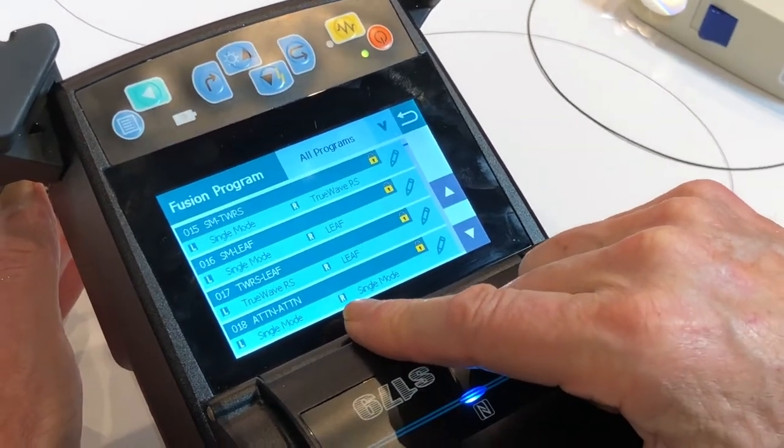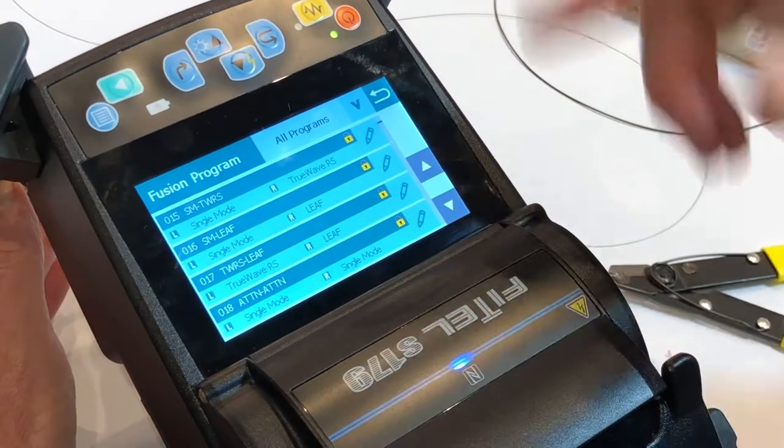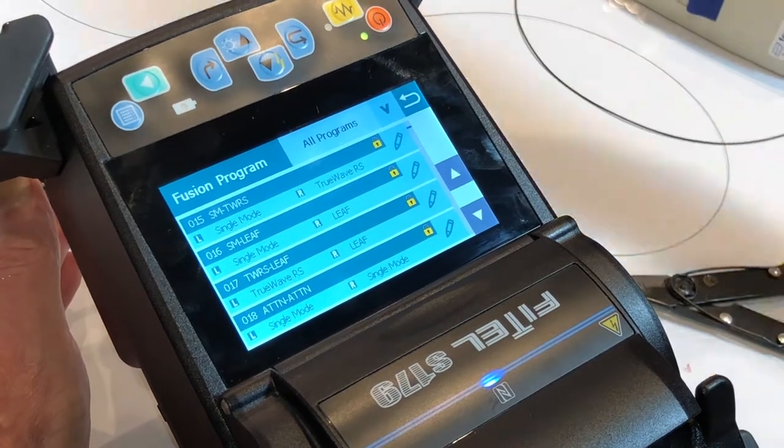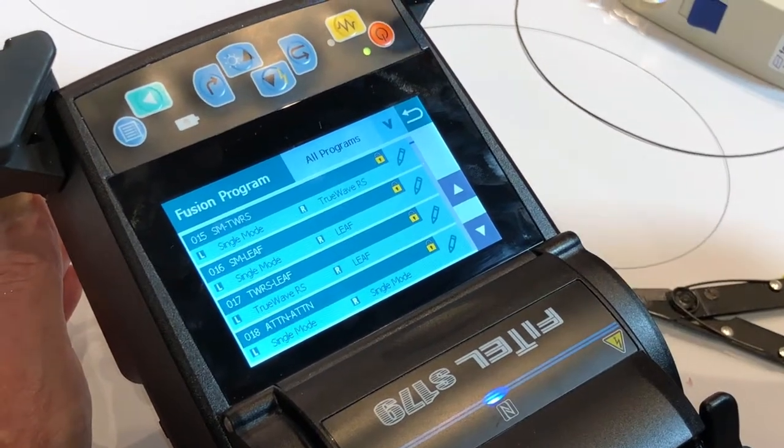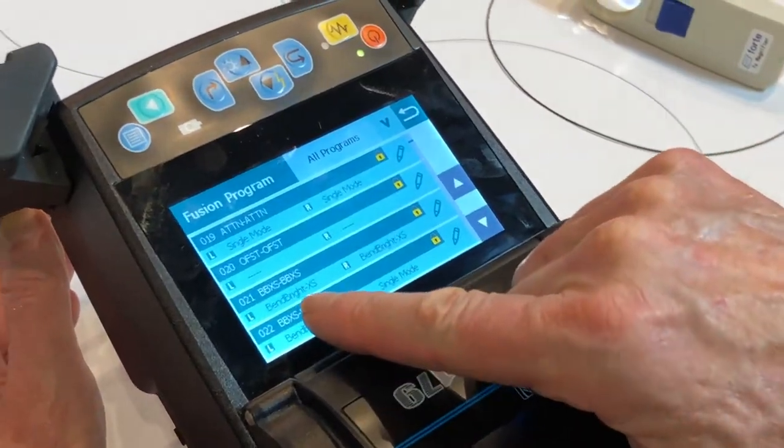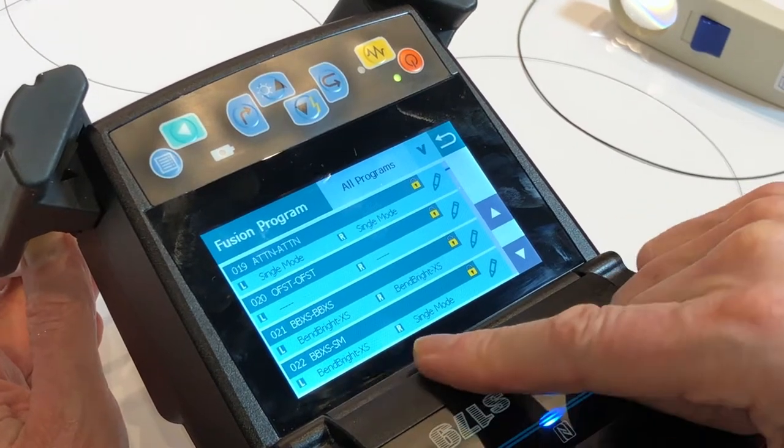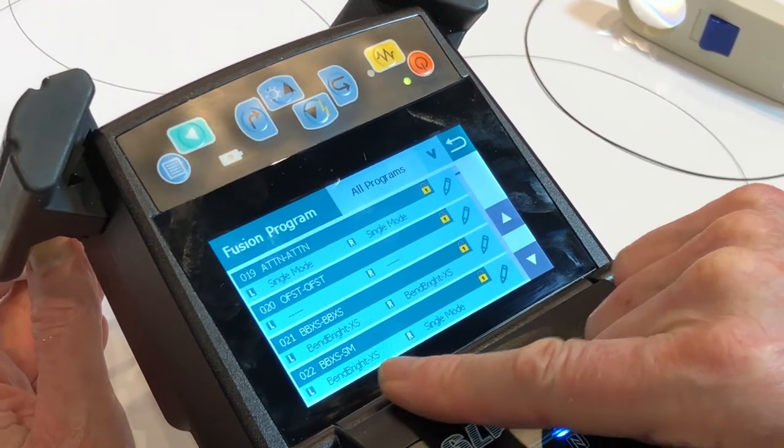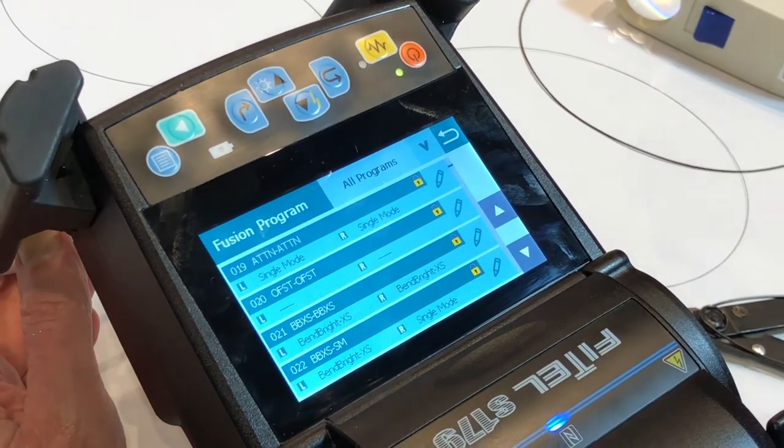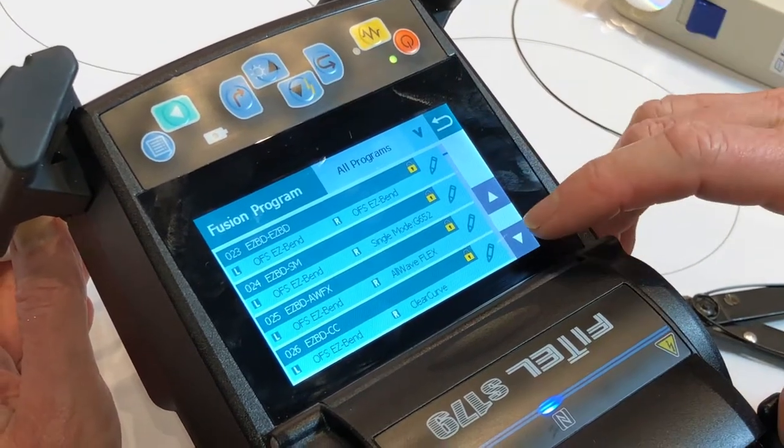Attenuation mode is a fairly simple one to set up where you want to splice into a pigtail a 5dB loss and then install that so you don't have to buy an attenuator for that particular application. BBXS is also a very common fiber, particularly here in Australia. BBSX to single-mode and BBX to BBSX is a very common splice requirement. Easy Bend is another trade name.